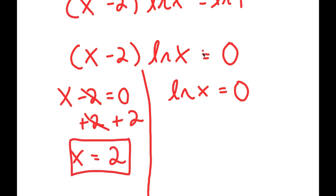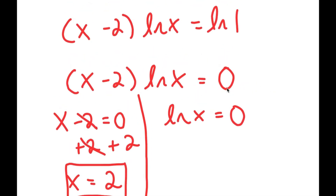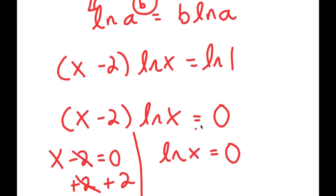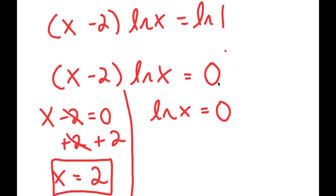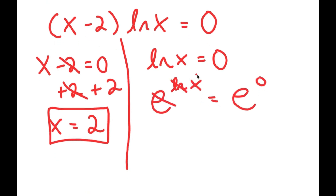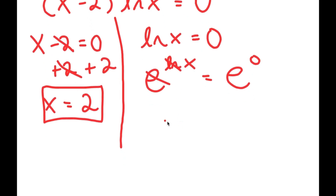For my second equation, I have ln of x equals 0. This is asking: ln of what equals 0? We already know ln of 1 equals 0. But if we didn't, we could take e to the power of both sides: e to the power of ln x equals e to the power of 0. Since e and ln cancel out, x equals e to the power of 0, which is 1.